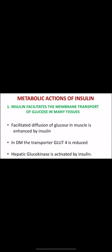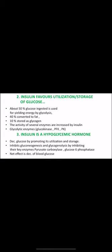The main metabolic function of insulin is facilitating glucose uptake via diffusion into muscle. In diabetes mellitus, the GLUT4 transporter is reduced. Insulin activates hepatic glucokinase and favors glucose utilization and storage: about 50% is used in glycolysis, 40% converted to fat, and 10% stored as glycogen. Glycolytic enzymes glucokinase, PFK, and PK are all increased by insulin.